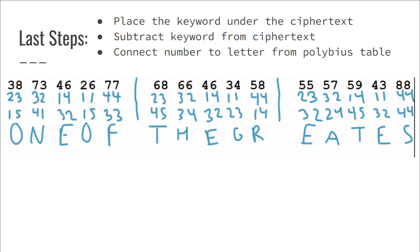We have 15 so it will be o, we have 41 so it will be n and so on for the rest of the letters.